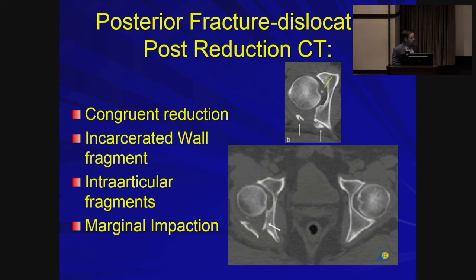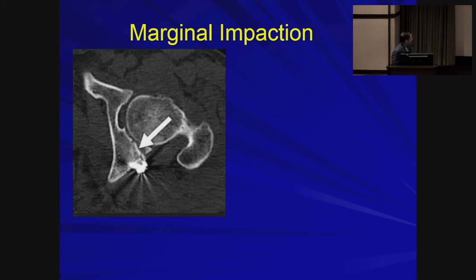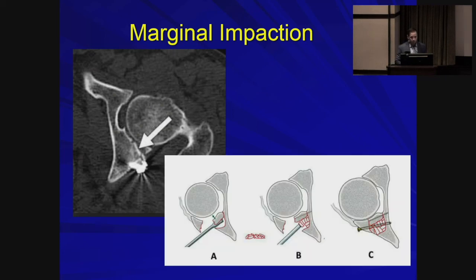Marginal impaction is critical to identify. When the fracture dislocates, an osteochondral fragment is pushed and rotated — likely about 90 degrees — into the cancellous bone. This must be found and repaired intraoperatively. If not addressed, as shown in a postoperative example with a plate and screws but unreduced marginal impaction, the result is a non-concentric femoral head, leading to instability and post-traumatic arthritis. The correct approach: lift the impacted fragment, fill the resulting void with bone graft or synthetic filler, then place hardware.